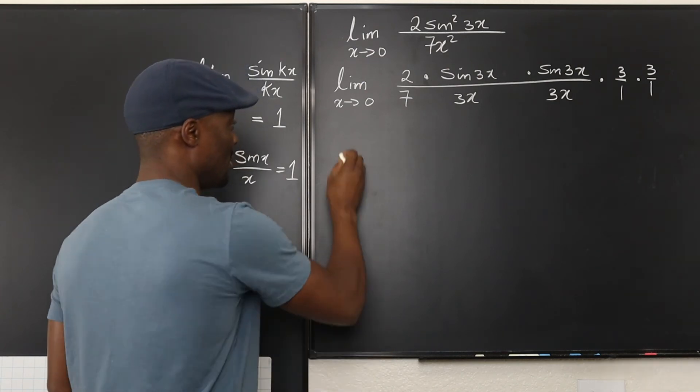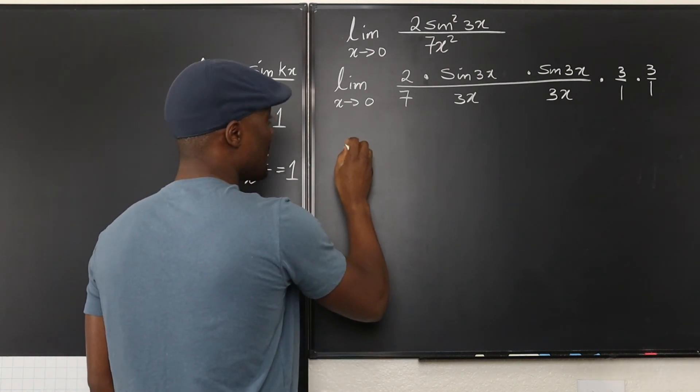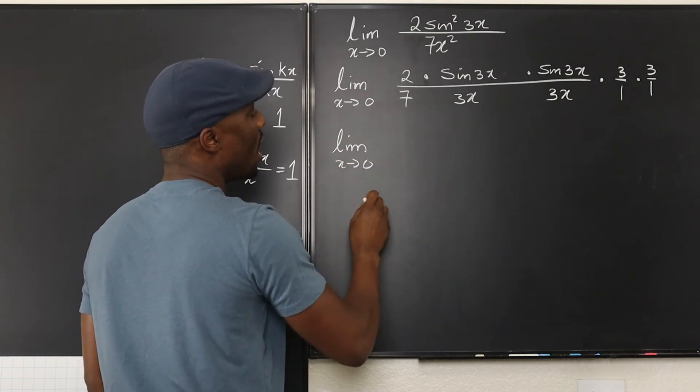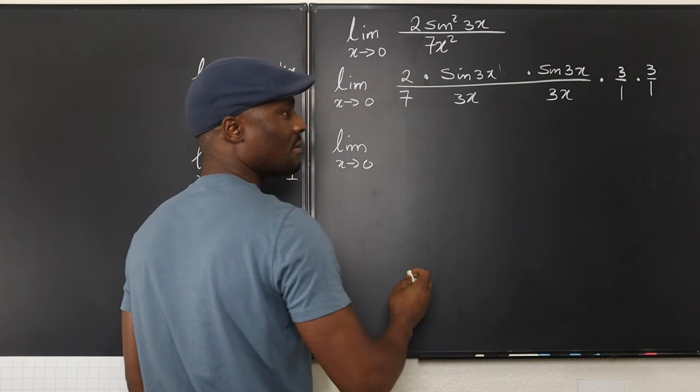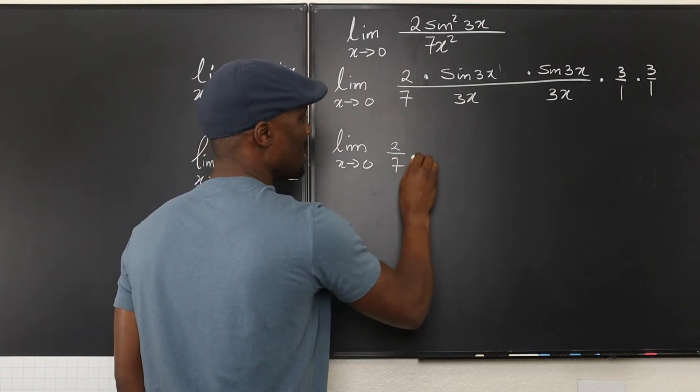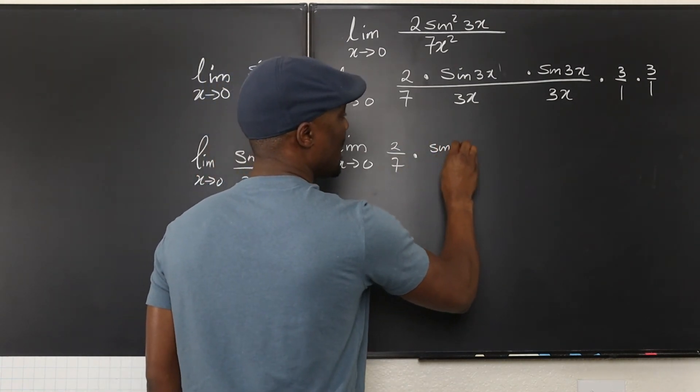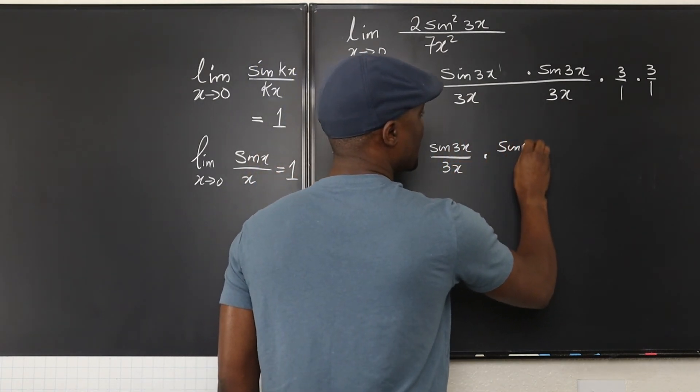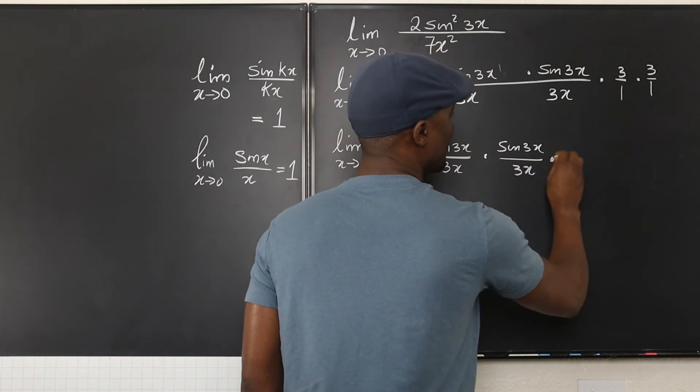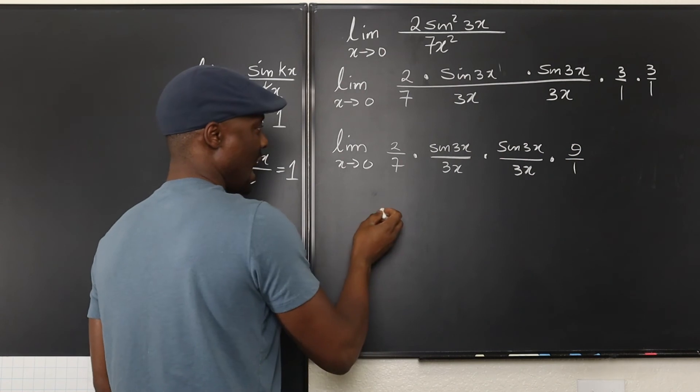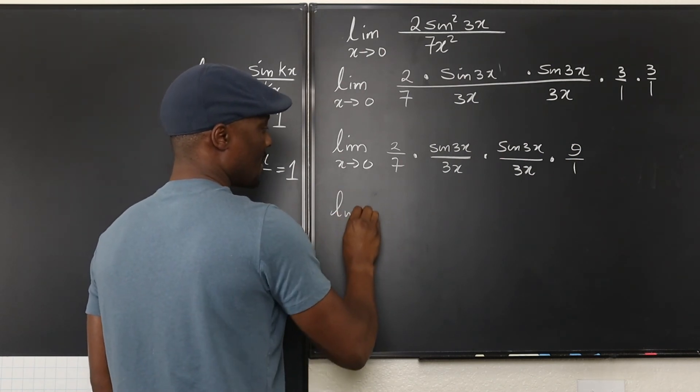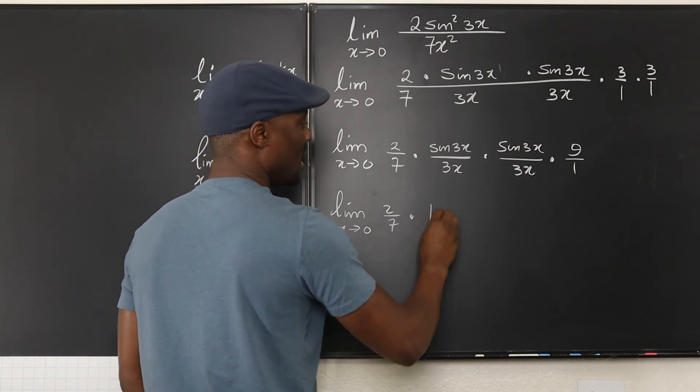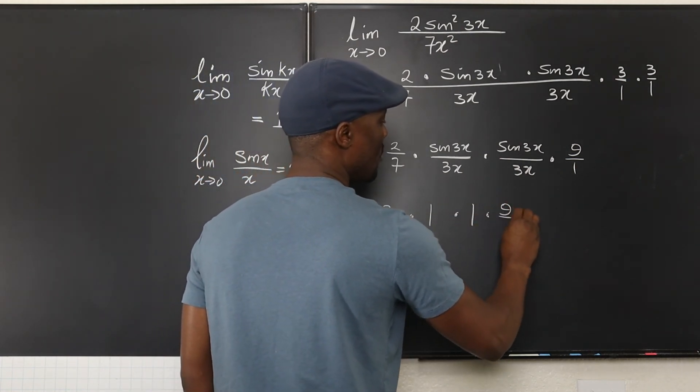So now I can get into my answer. So this tells me that the limit as x approaches 0 of, well, this is 1. So I'm going to break it down. 2 over 7, multiplied by sine 3x over 3x, multiplied by sine 3x over 3x, multiplied by 9 over 1. And that would give me the limit as x approaches 0 of 2 over 7 times 1 times 1 times 9 over 1.